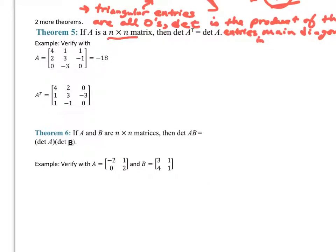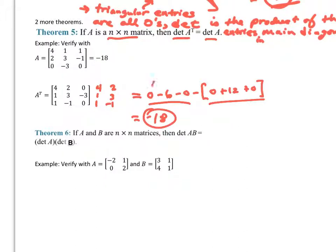And theorem 5: if A is an n by n matrix, the determinant of A transpose is equal to the determinant of A. It's nice to kind of write these numbers out and see how they fall in line with the other matrix. And I'm going to get negative 18 again. It works for all of them. And then the last one: if A and B are n by n matrices, then the determinant of the product is equal to the product of the determinants. Why don't you go ahead with this simple example and verify that for yourself.